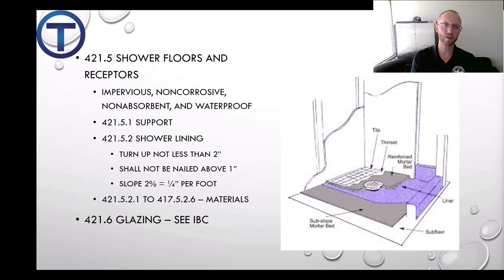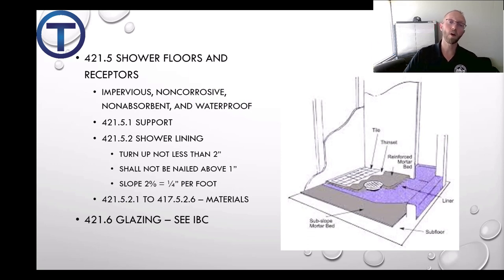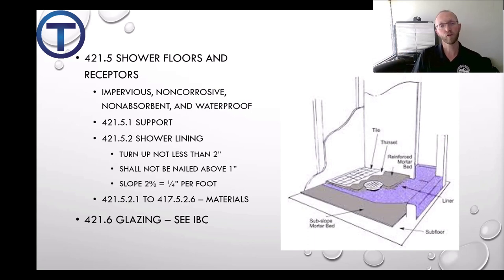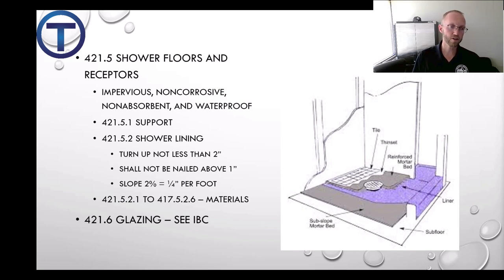It's important for plumbers to understand the pan requirements. The pan goes under the floor and has to come up along the walls, along the studs, at least two inches, and shall not be nailed or screwed any less than one inch above that floor. You don't want to shoot holes in the pan that's supposed to catch water if the tile fails. Water can just flow into the pan and not destroy the subfloor below. The pan has to have a slope of a quarter inch per foot.